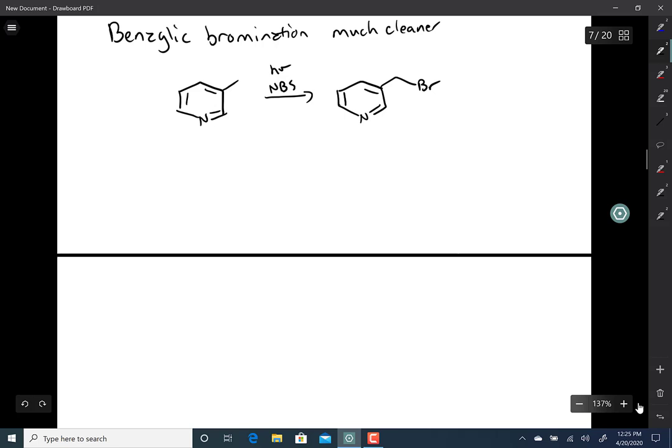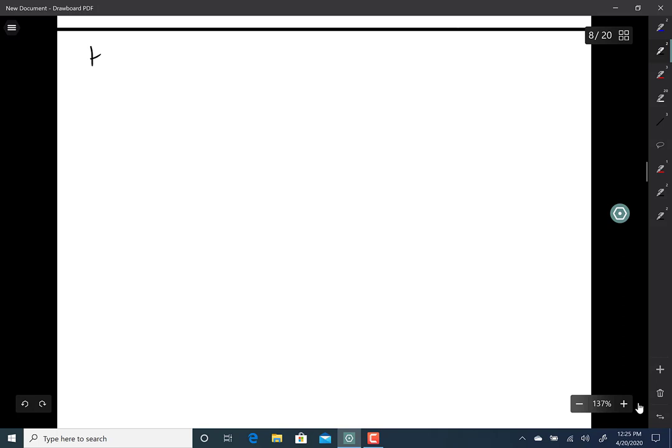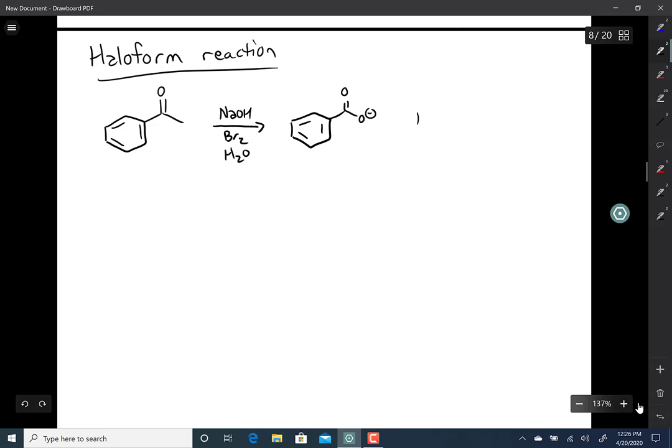Next reaction is called a haliform reaction. Basically, if you take a methyl ketone and treat it with base and bromine, you end up with a carboxylate and a haloform. In this case, if bromine is used, you end up with bromoform. If chlorine is used, you end up with chloroform.